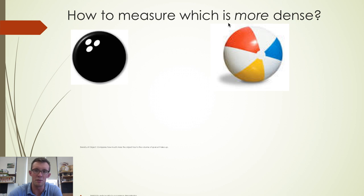So how do we measure whether something is more dense or more compact than something else? Take for instance a bowling ball and a beach ball. Intuitively we might say that the bowling ball is more dense than the beach ball, but how do we prove that? How do we calculate the density of the bowling ball and the density of the beach ball?